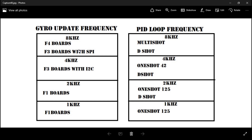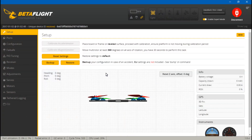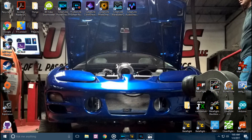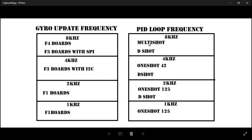As far as the gyro update frequency, this will come down to what flight controller you're using and whether it uses SPI or I²C — at least for the F3 boards. For the PID loop frequency, this will depend on what type of ESCs you're using, but it also comes down to what your CPU load is. I recommend 35% or lower — some people say 20, some say 50, but I shoot for 35 or lower. Just because you're using Multishot or Dshot 600 ESCs does not mean you can run your PID loop frequency at 8 kilohertz.